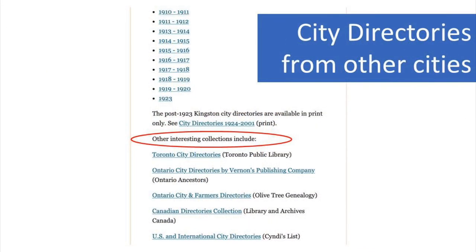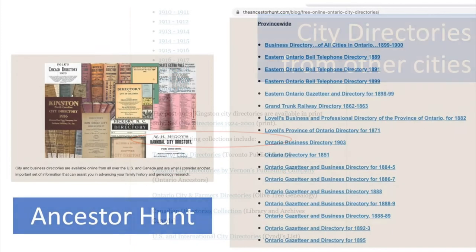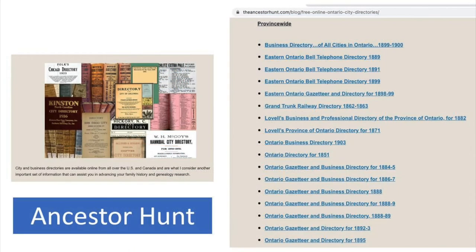Also on the Digital Kingston page you'll find some links to collections of city directories from other cities. A newer site called Ancestor Hunt has an excellent list of links to free online city directories — it's a huge list and includes cities throughout Canada and the United States. The link is in the description box below this video.